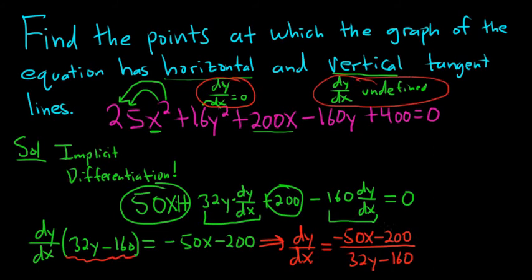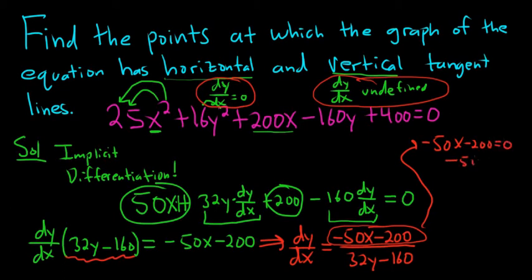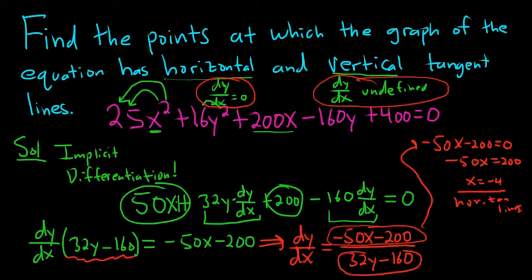The slope is 0 whenever the numerator is 0. So negative 50x minus 200 equals 0, meaning negative 50x equals 200, so x equals negative 4. That gives us horizontal tangent lines. The slope is undefined whenever the denominator is 0, so 32y minus 160 equals 0, meaning 32y equals 160, so y equals 5.